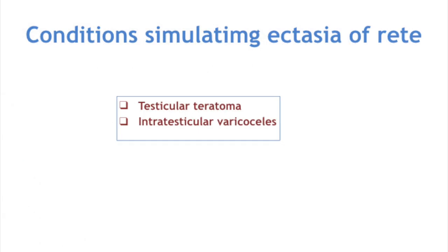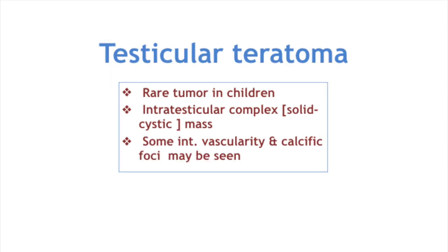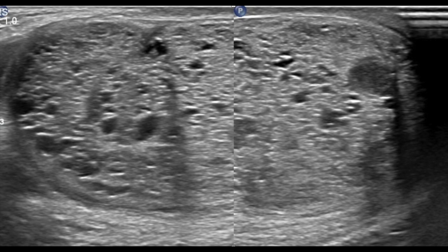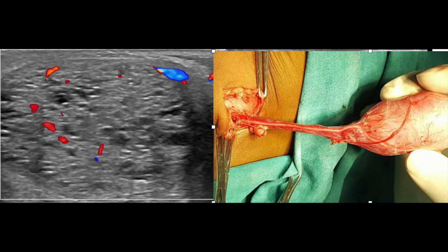Certain conditions simulate ectasia of the rete testis — these are testicular teratoma and intratesticular varicoceles. Testicular teratoma is a rare tumor in children; it is basically an intratesticular complex mass with solid and cystic areas, some internal vascularity on color Doppler, and calcific foci. Biopsy confirmed teratoma in this case. The differentiating point is that it affects the entire testis and is not confined within the area of the mediastinum as seen in rete testis ectasia.